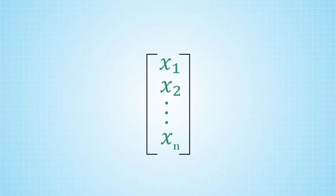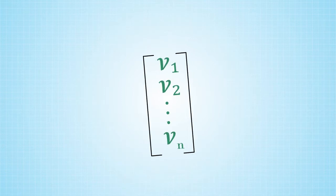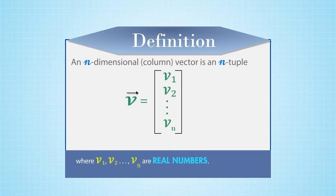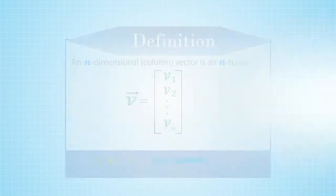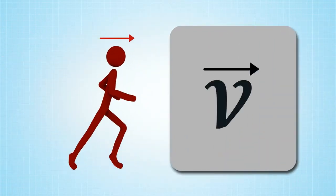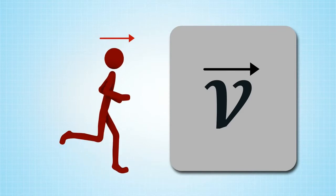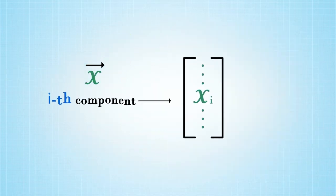Most of the time, we will represent these n-tuples as columns. An n-dimensional column vector is an n-tuple where v1, v2, and vn are real numbers. By convention, variables with an overhead arrow will denote vectors. Moreover, given a vector x, we'll denote its i-th component by xi.